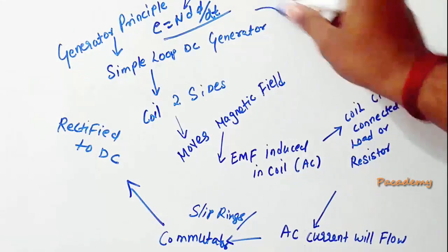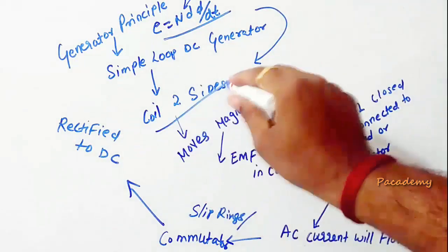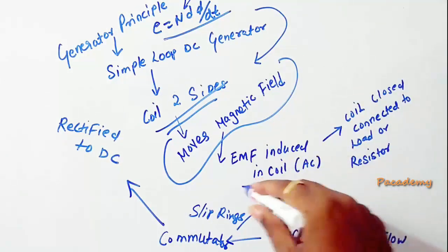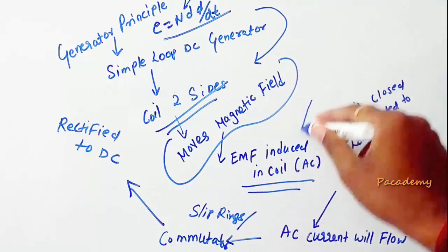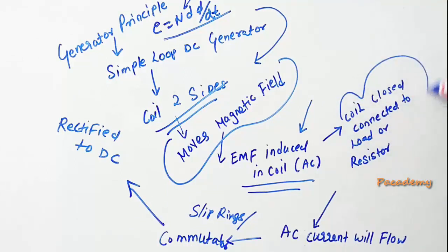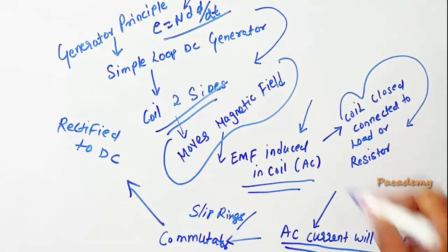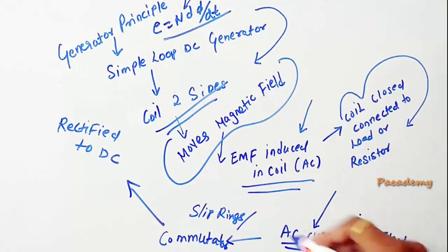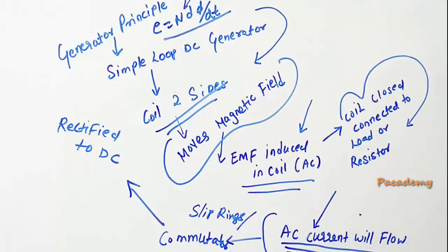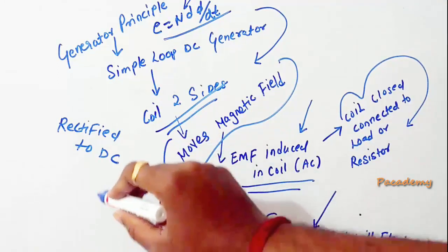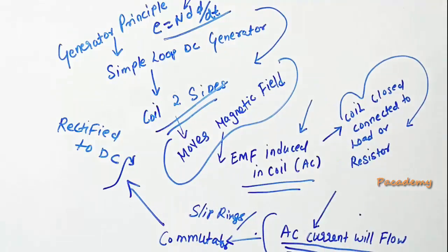In a simple loop generator, in its simplest form, there will be a coil with two sides. The coil will move in the magnetic field, and when this movement happens, an EMF is induced in the coil. This induced EMF is AC, and if the coil is connected to a load or resistor, an AC current will flow. To convert this AC induced current to DC, slip rings or a commutator must be used, which provides the rectifying action.